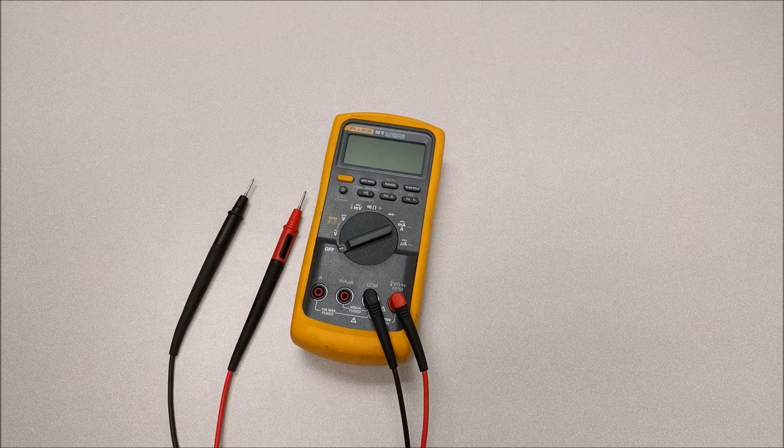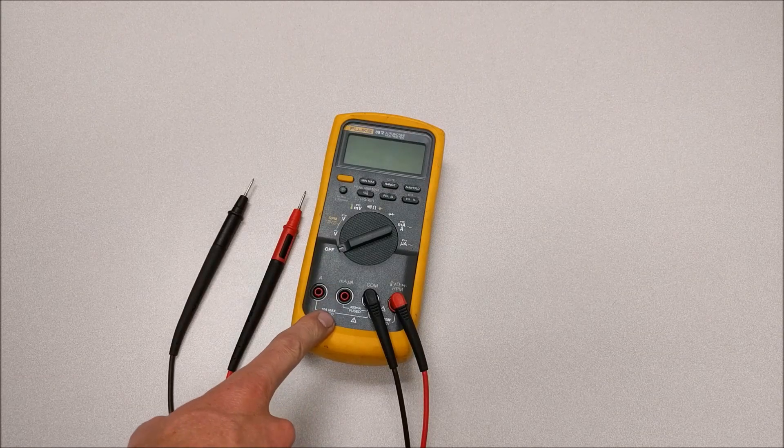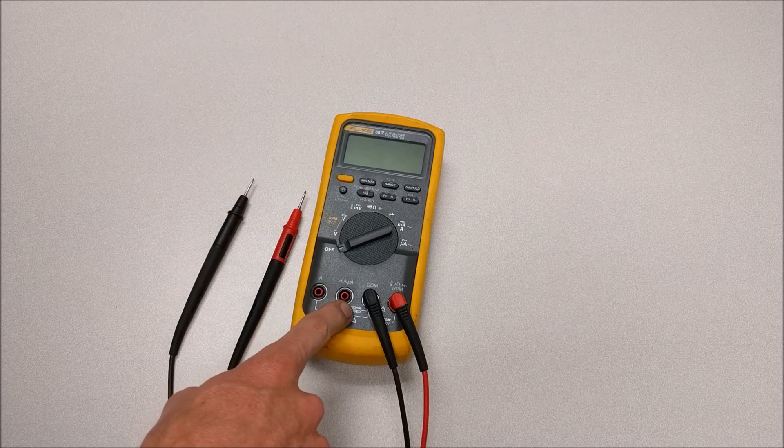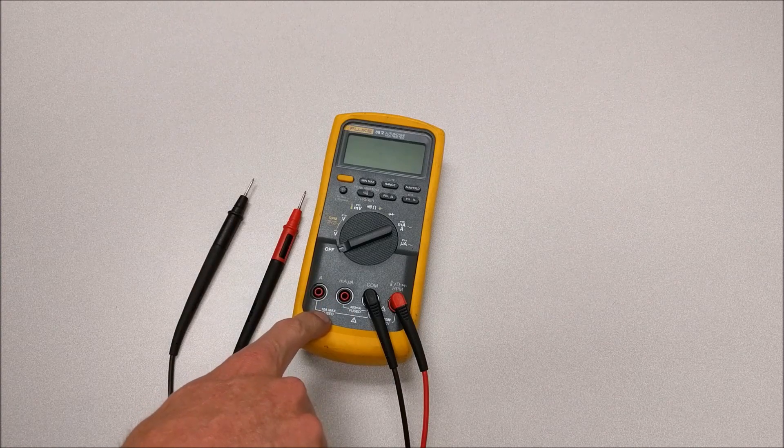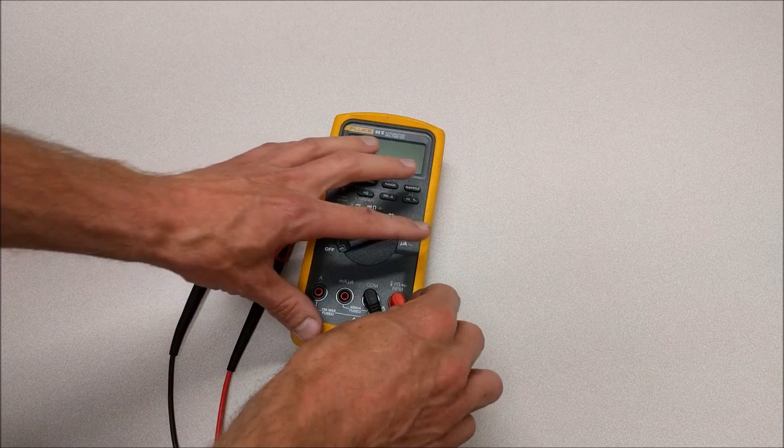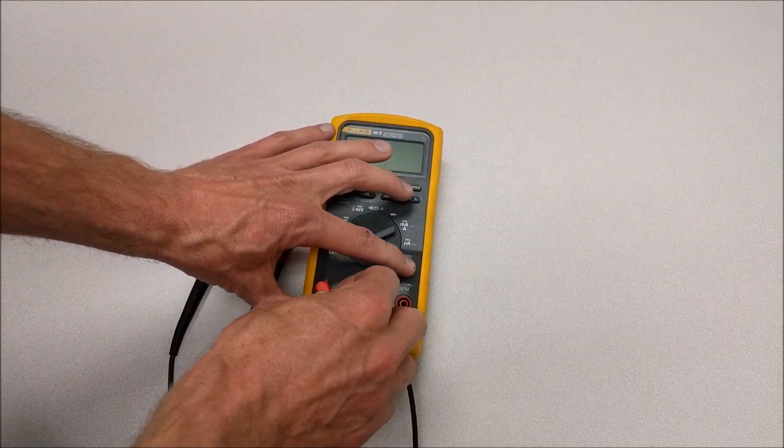I want to make a quick video today to show you how to check the fuses in your multimeter. Anytime you have a multimeter that measures current, it has to be fused because when you measure current, you move your lead over to one of these positions.